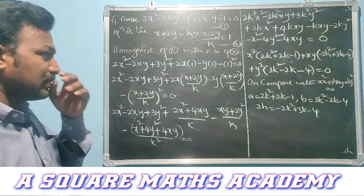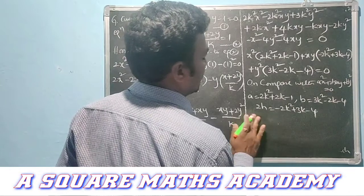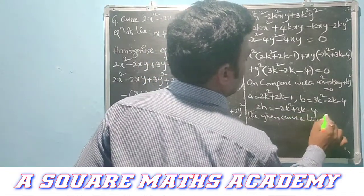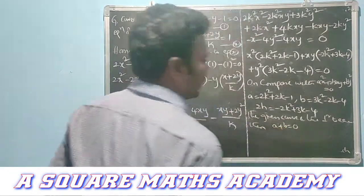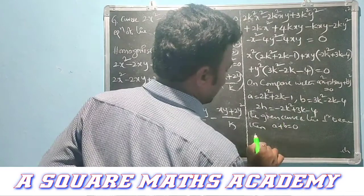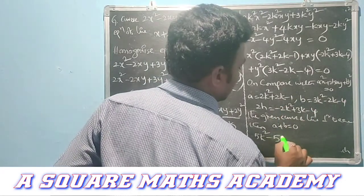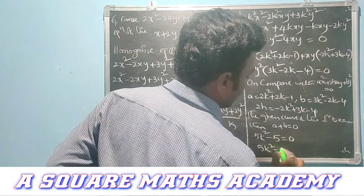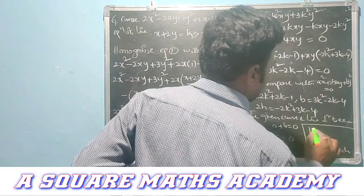Since the lines are perpendicular, a + b = 0. So (2k² + 2k − 1) + (3k² − 2k − 4) = 0, giving 5k² − 5 = 0, so k² = 1, therefore k = ±1.